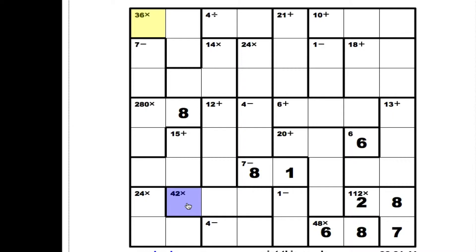Alright, moving on. With this 8 here, 24 in a multiplication problem can only be gotten with 4 times 6. So, we're left with 4 in a subtraction problem. Because we've got the 4 used up and the 6 used up, there are only two possible equations left: 5 minus 1, or 7 minus 3.